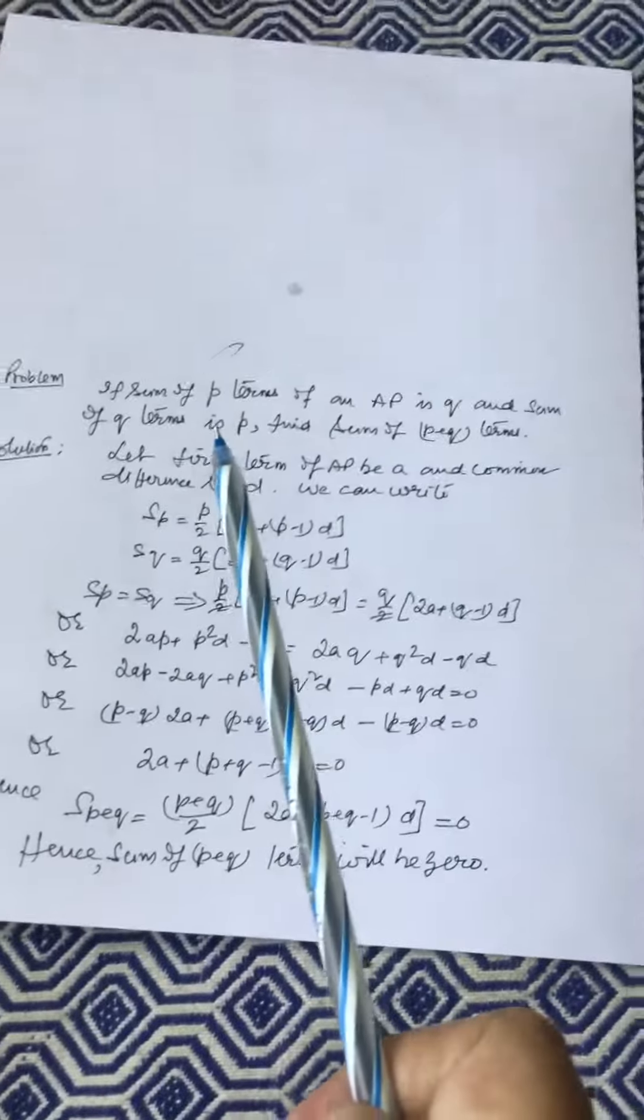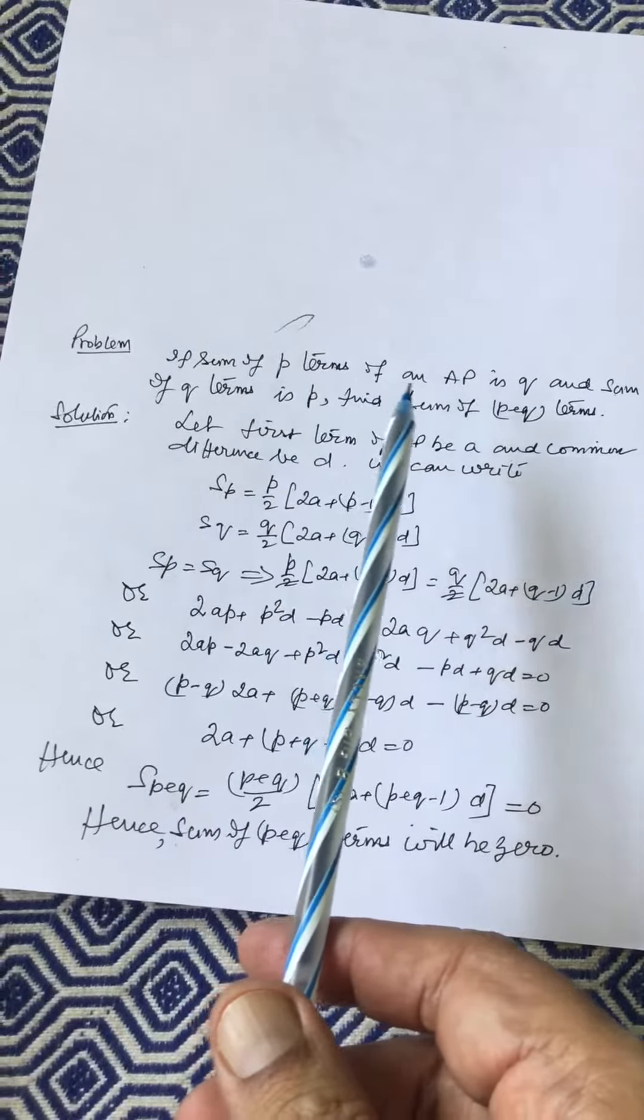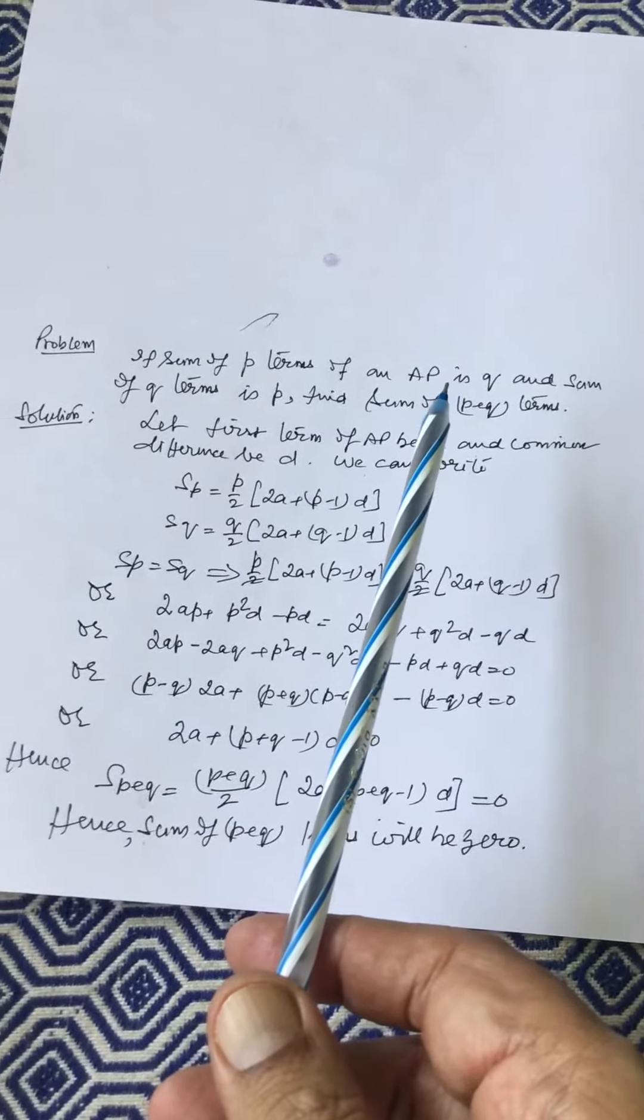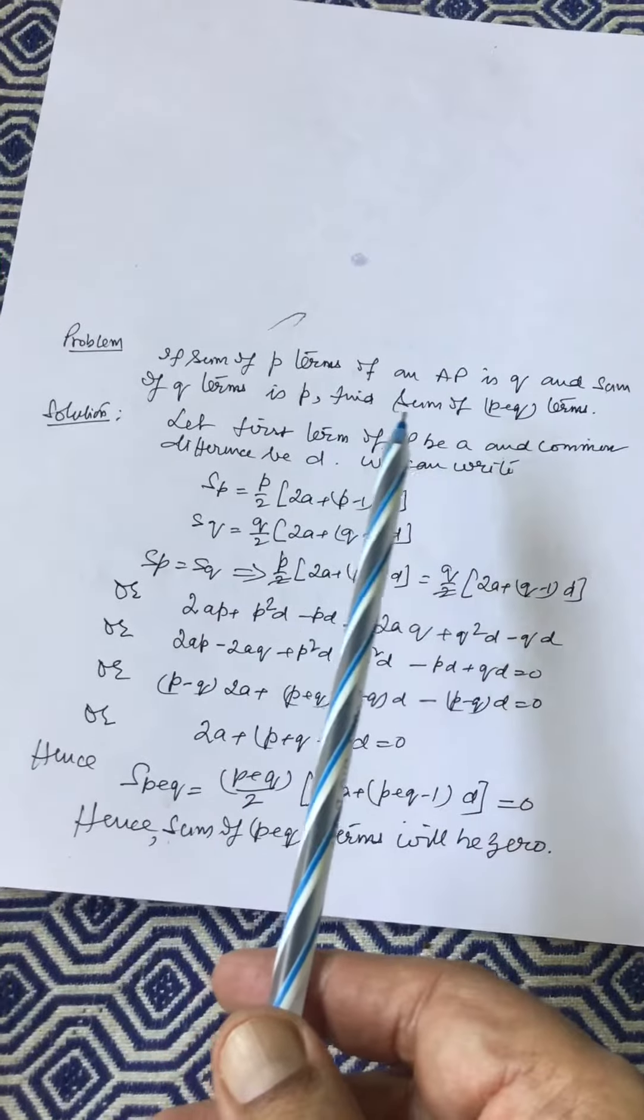Now let us see another problem. If sum of P terms of an AP is Q and sum of Q terms is P, then find sum of P+Q terms.